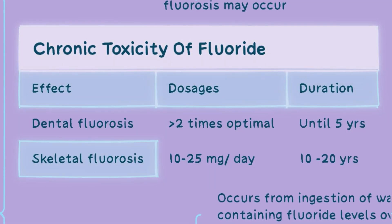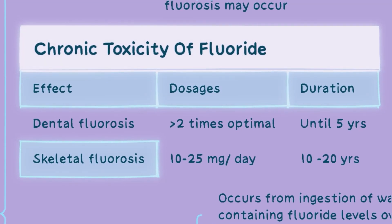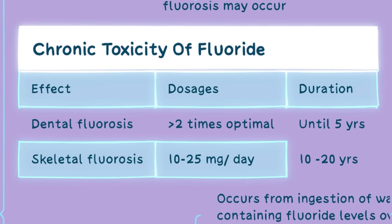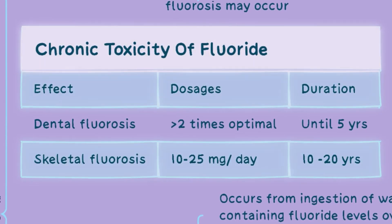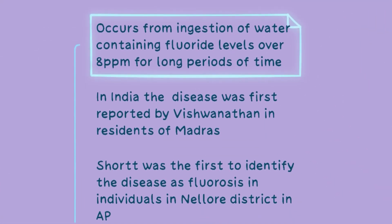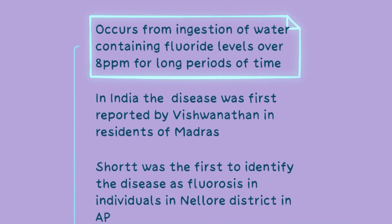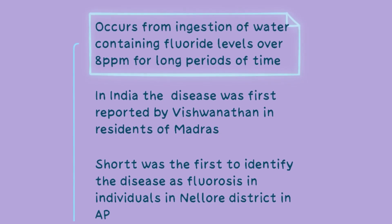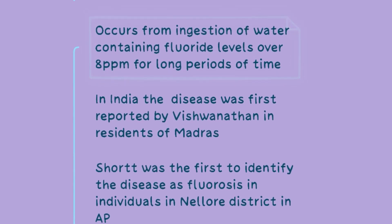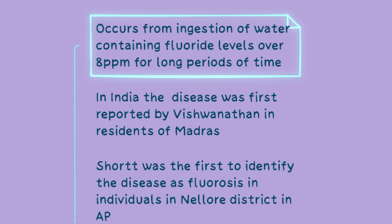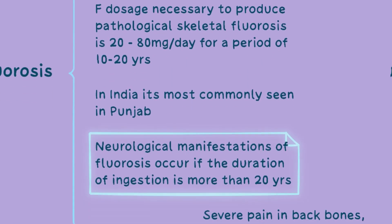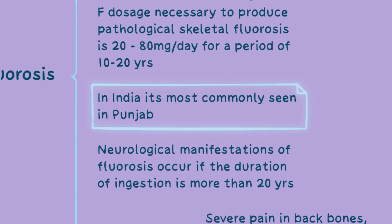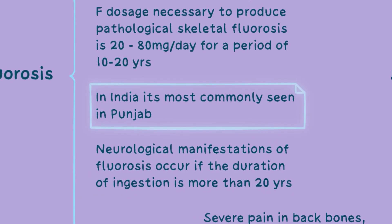Skeletal fluorosis occurs with long-term ingestion of fluoride at doses ranging from 10 to 25 mg per day over a period of 10 to 20 years. It is commonly observed in regions with water fluoride levels exceeding 8 parts per million. Skeletal fluorosis affects the bones and joints, leading to stiffness, pain and skeletal abnormalities. Neurological manifestations may occur if the duration of exposure exceeds 20 years. In India, it is most commonly seen in Punjab.